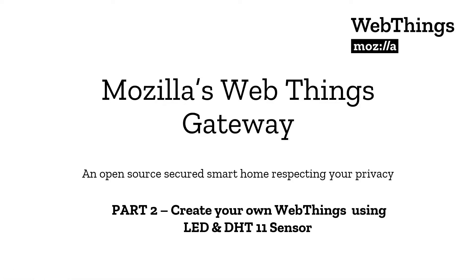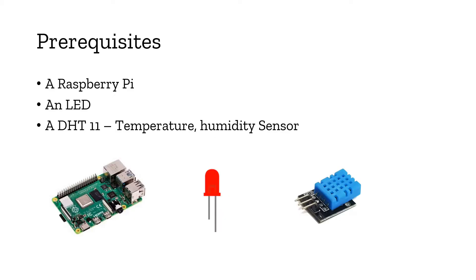Welcome to techbeast.org. This video is the continuation of our previous video where we saw how to set up Mozilla's Web Things Gateway and install the gateway software stack. In this part two, we are going to create our own web things using a simple LED and a DHT11 temperature and humidity sensor, and monitor and control all these from Mozilla's Web Things Gateway. Prerequisites: a Raspberry Pi, an LED, and a DHT11 sensor. I recommend watching part one first, linked in the description.